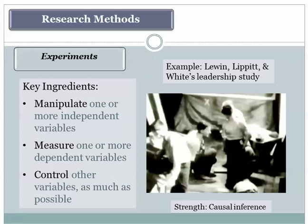The second method is experiments. You usually have to have these key characteristics: you have to manipulate an independent variable, measure a dependent variable, and control other variables as much as possible. The independent variable is your causal variable — you change its level to see what impact that change has on other variables. Those other variables, the dependent variables, depend upon the independent variable. In an experiment, you try to control other variables so they are not influencing your outcome, because uncontrolled variables systematically associated with your independent variable will weaken your capacity to draw causal inferences.